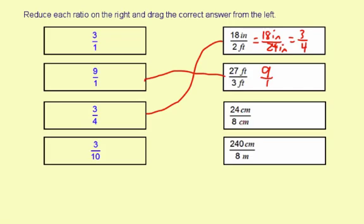24 centimeters to 8 centimeters, the units are the same, so you can just go ahead and reduce. 24 to 8 reduces by 8. It's going to be 3 to 1.